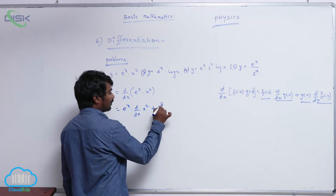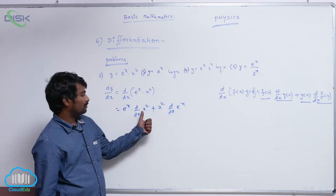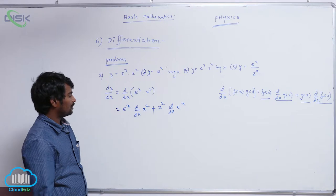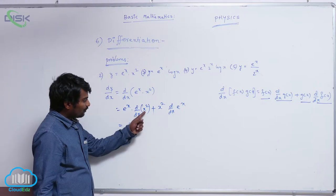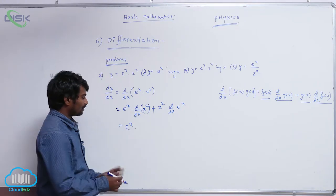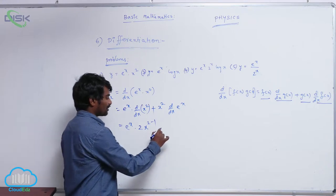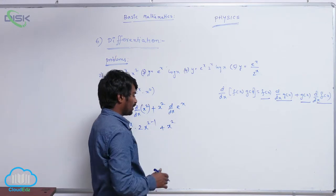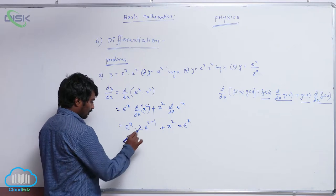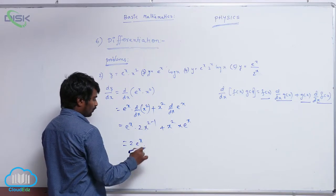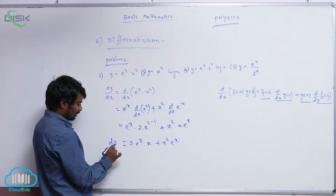So we get: e power x into d by dx of x square, plus x square into d by dx of e power x. Now applying the formula d by dx of x power n equals n into x power n minus 1, the derivative of x square is 2x. And d by dx of e power x is e power x. So dy by dx equals 2e power x into x plus x square e power x.